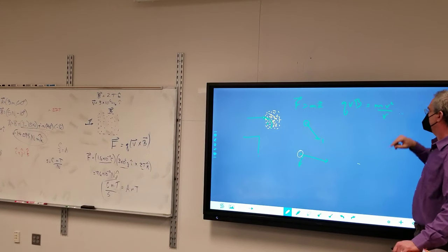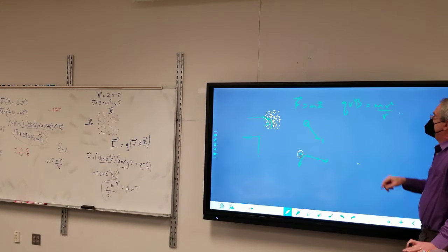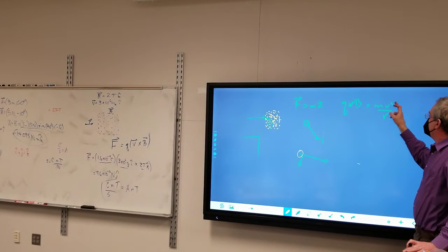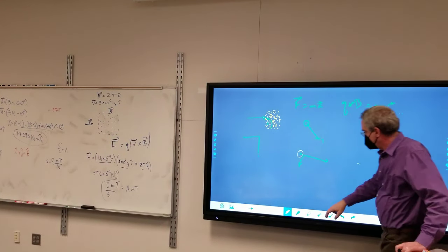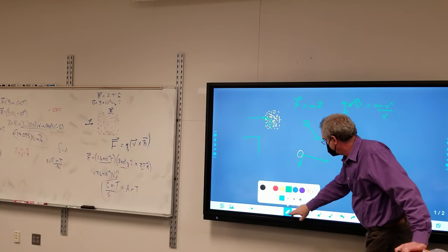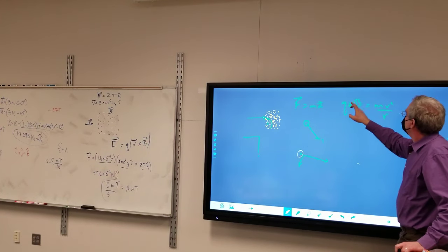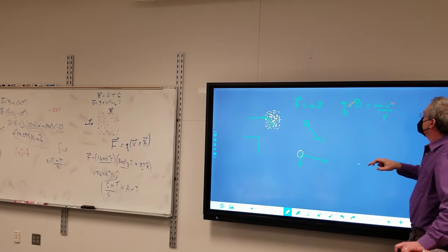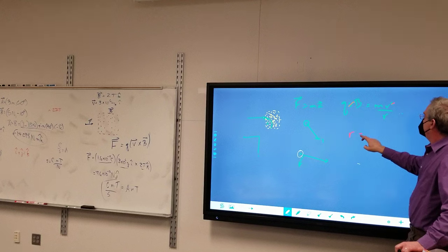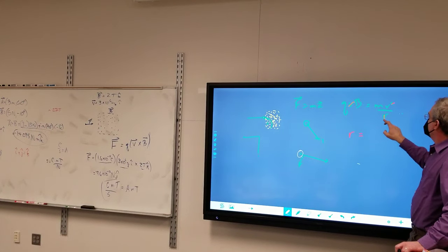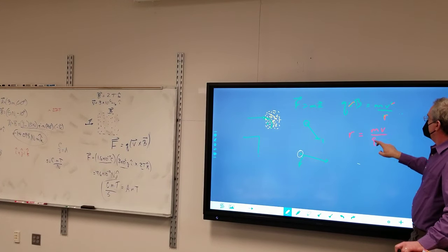Let's do this to solve for R. That cancels out with one of those. That cancels out with one of those. Solving for R. R is equal to MV over QB.